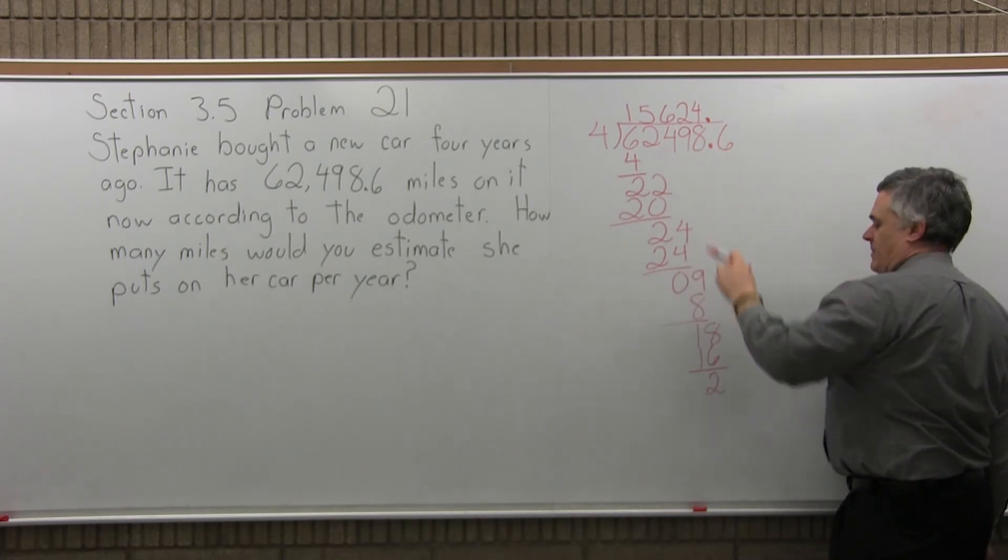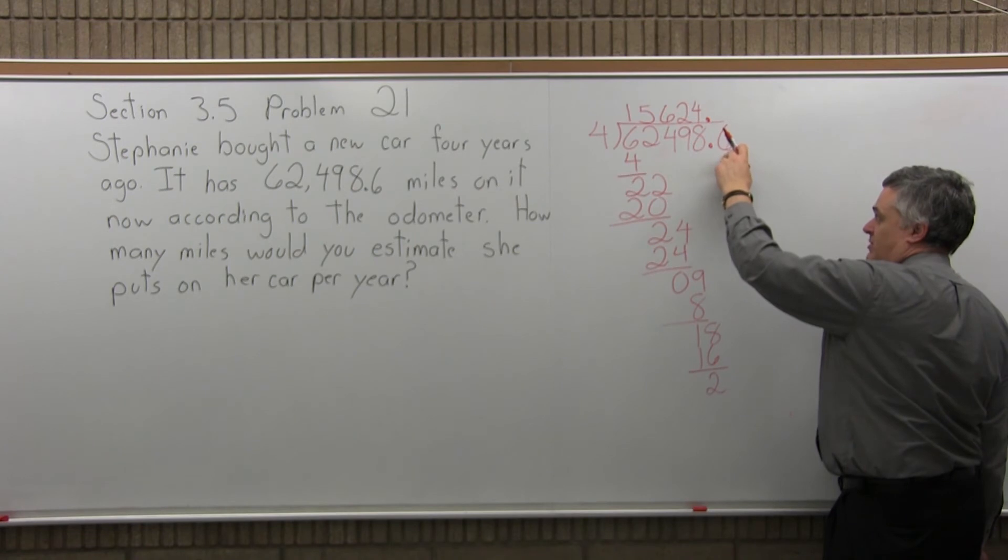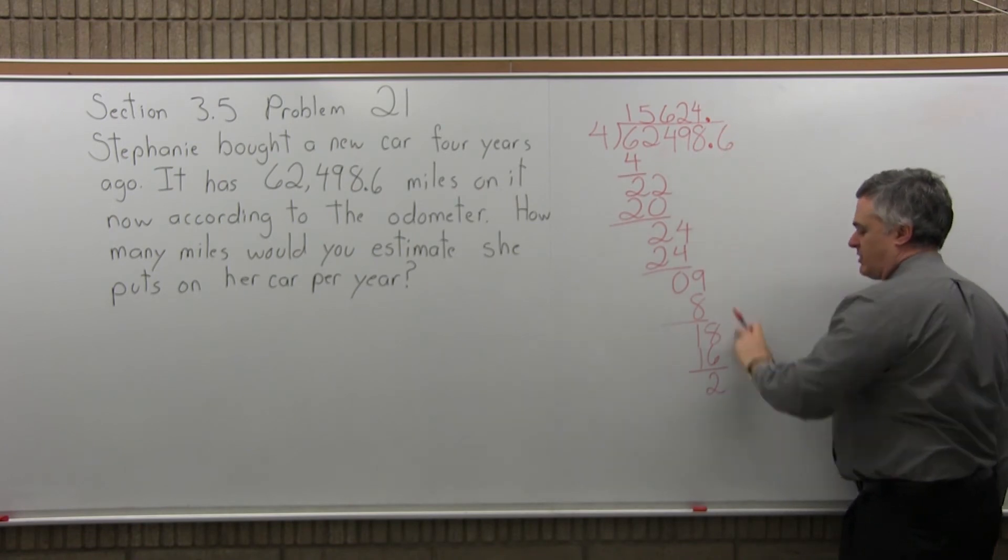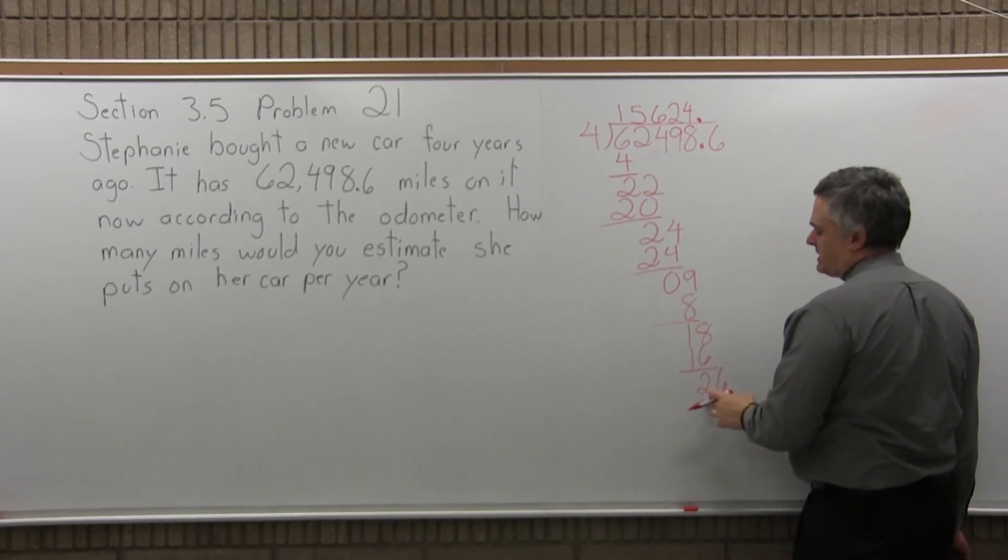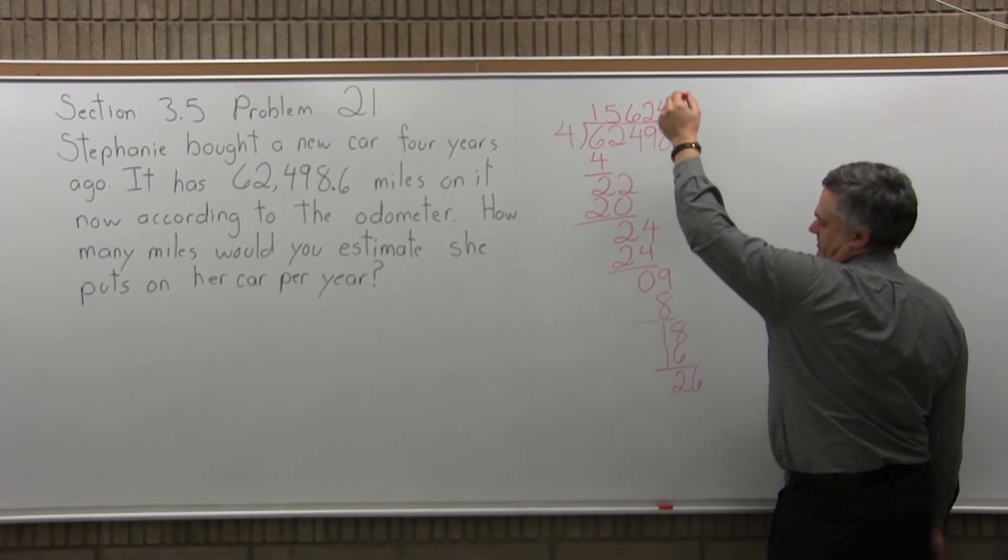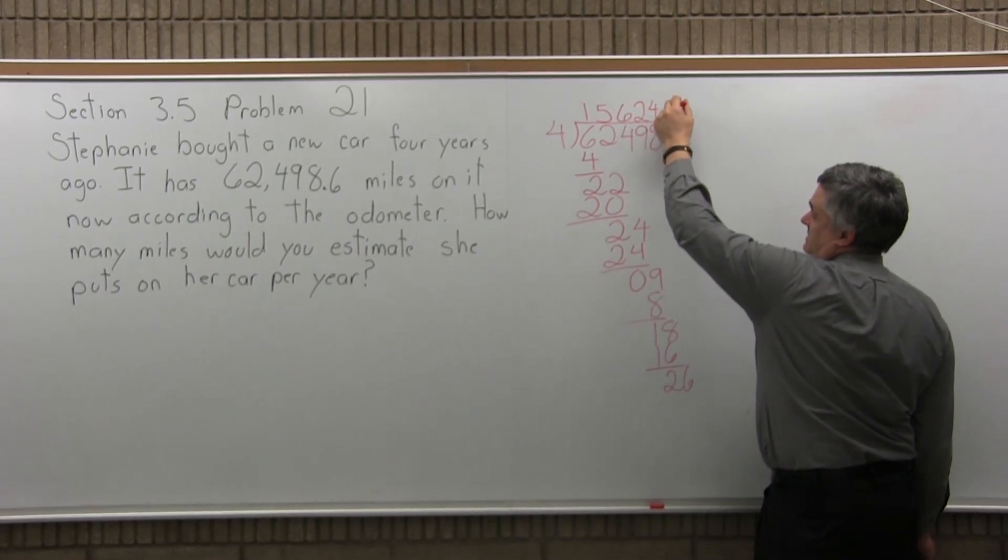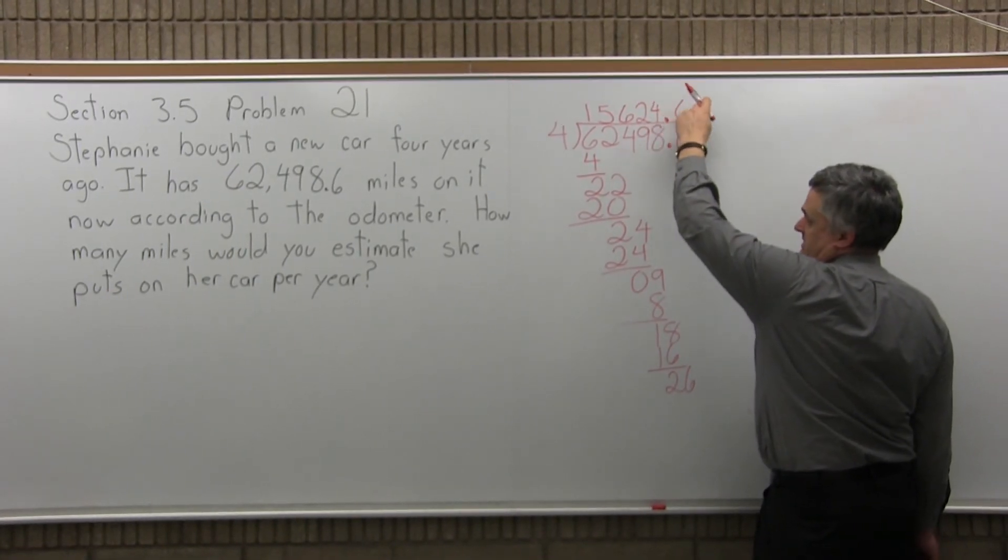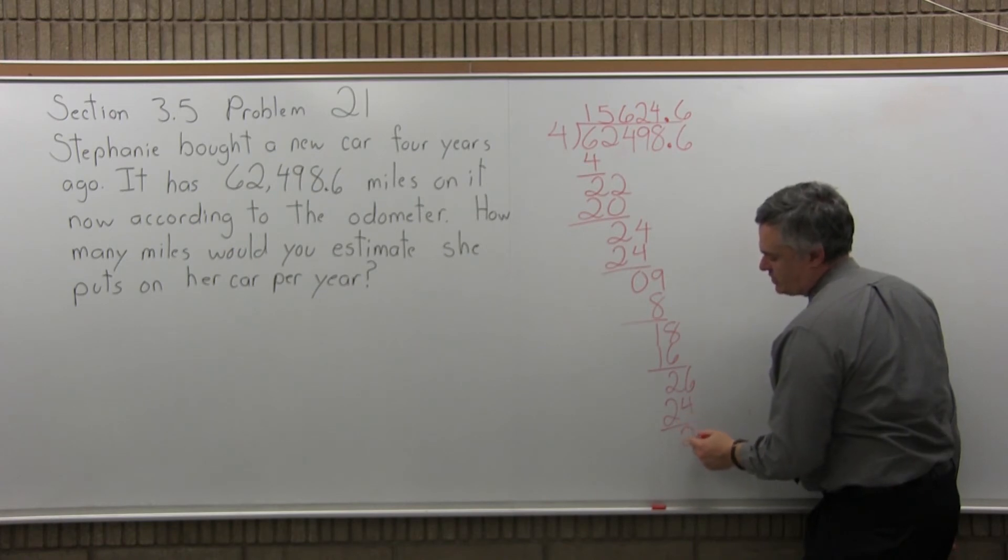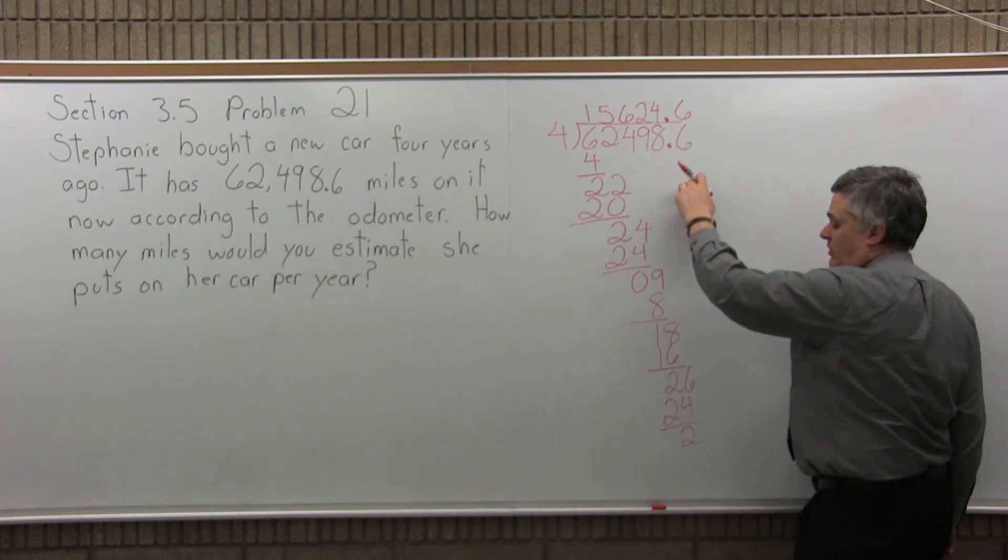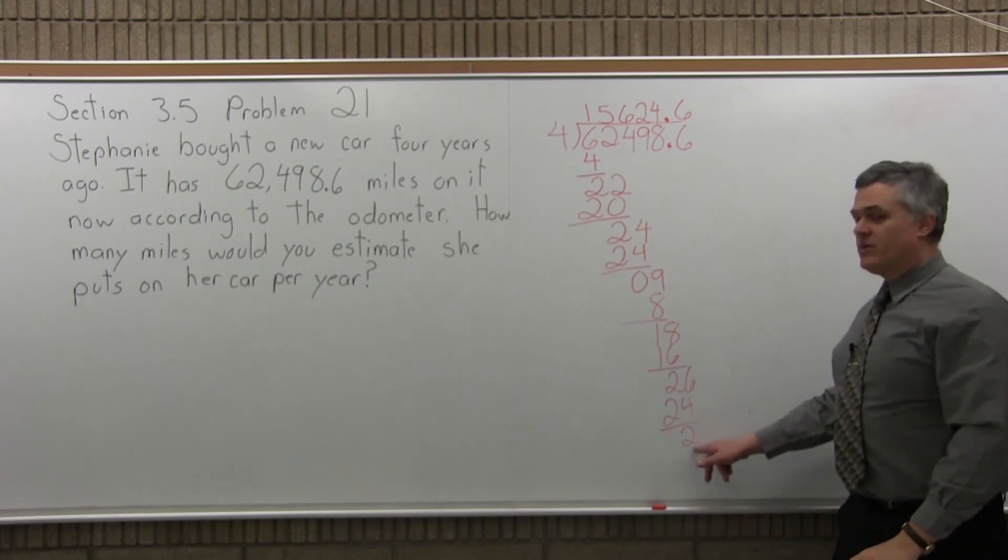So now, go back up to the top, the next digit over is a six, pull it straight down. Put it next to the two I got, I have a 26. Four goes into 26 how many times? Well, it'll go in six times. Six times four is 24. And 26 minus 24 is two. Now, I got all the way to the end with the six, but it didn't go in evenly.